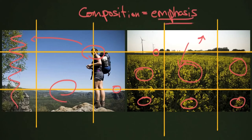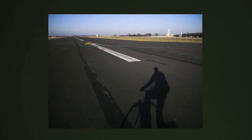And that is what composition is all about. Composition equals emphasis. Emphasis is the key to taking strong images. You want to know what your subject is, what you're photographing, and then use your composition as a tool to achieve that.